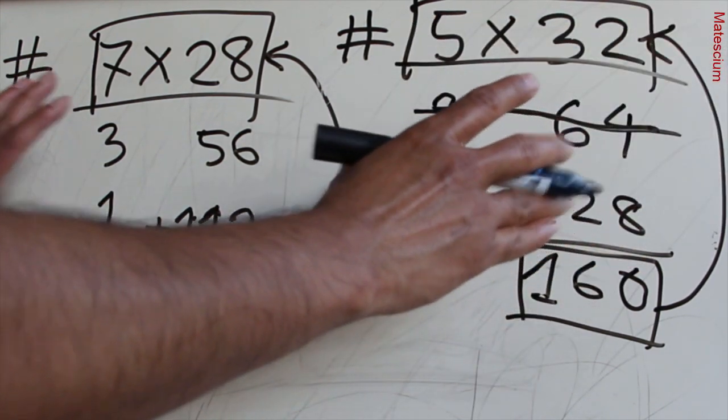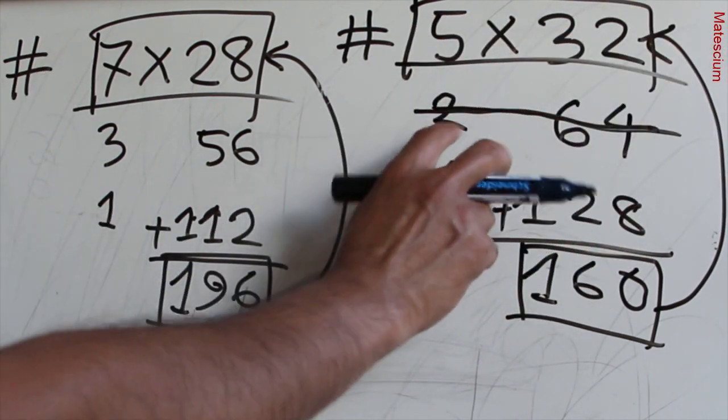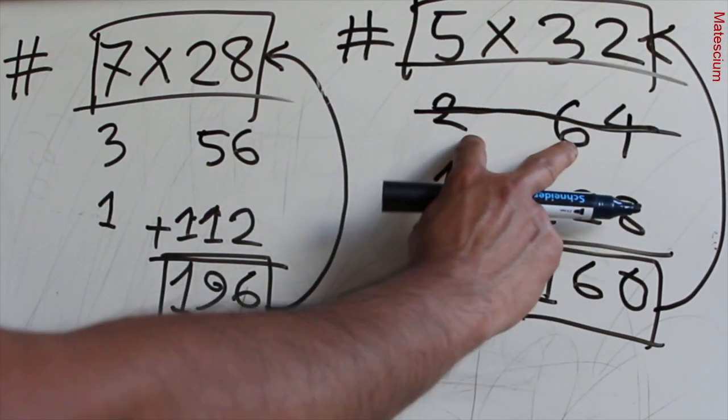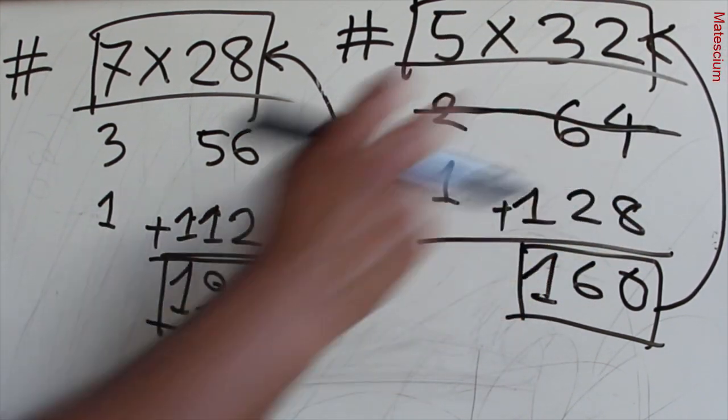This is the key difference: whenever both numbers in a row are even, that row should be removed from the calculation. That's the rule — nothing else.